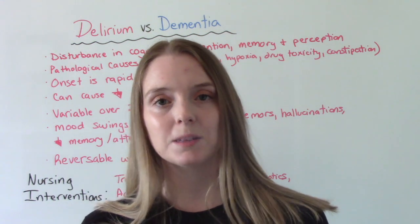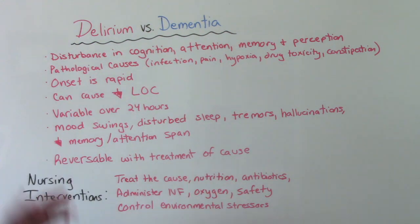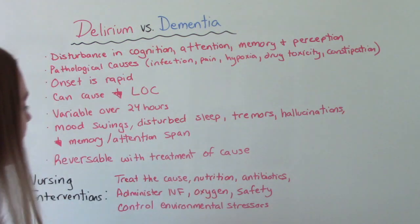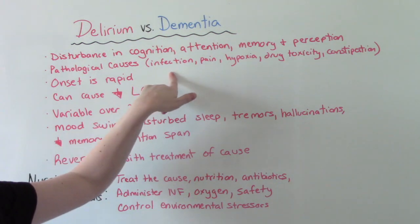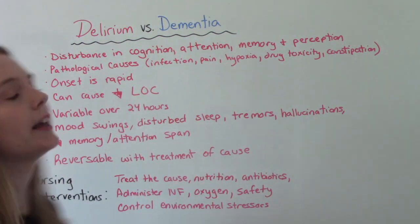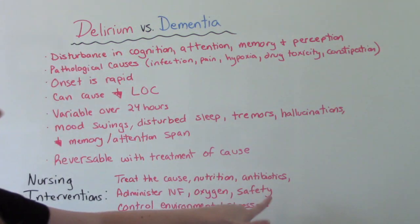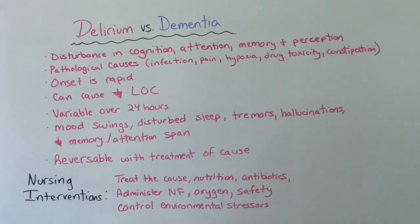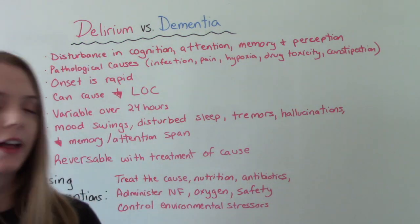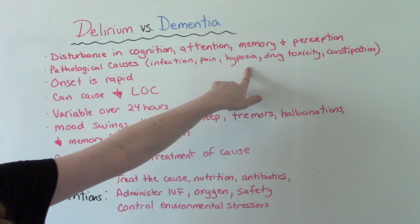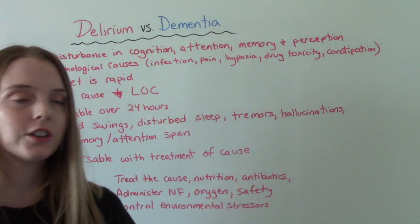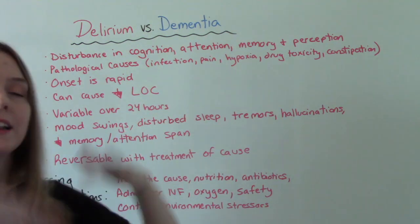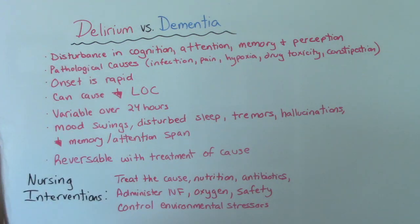Our nursing interventions for this patient population include treating the cause once we figure out what it is, nutrition, antibiotics especially if we know it's an infection. A big common cause of delirium is a UTI, so antibiotics will help treat that infection and make the delirium go away. We can administer IV fluids if there's an electrolyte imbalance, give oxygen if they're hypoxic, and treat pain to promote safety and comfort. Control environmental stressors.